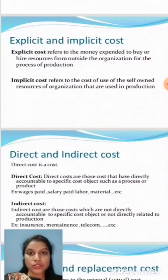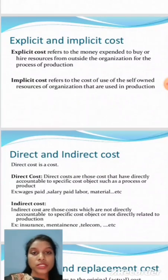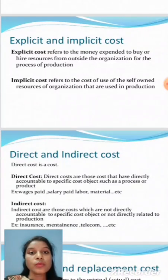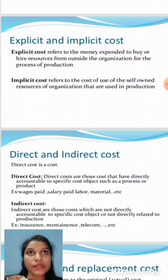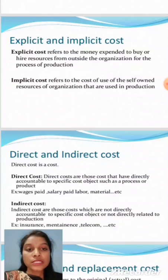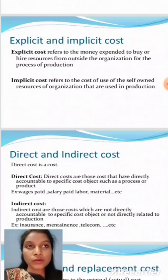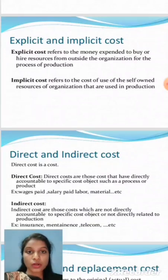Next, explicit and implicit cost. Explicit cost refers to the money expended to buy or hire resources from outside the organization for the process of production — any assets or resources not within but outside the organization. These are termed explicit costs. Implicit cost refers to the cost of using the self-owned resources of the organization — for example, spending on maintenance of machinery owned by the firm. These are called implicit costs.